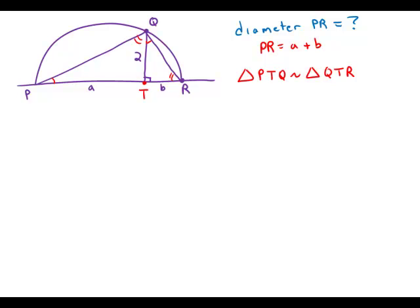Once we set up these similar triangles, we can set up proportions among the sides. Long leg over short leg, a over 2, equals long leg over short leg, 2 over b. We cross multiply this, and what we get is a times b equals 4.